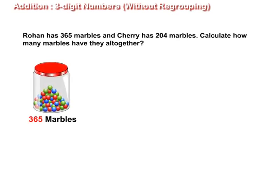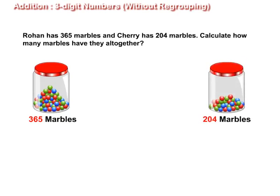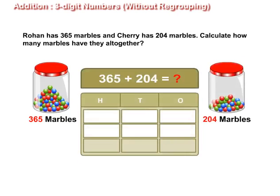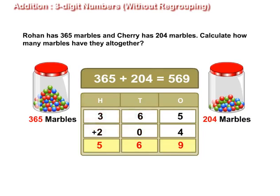Take one more example to understand addition of three-digit numbers by column method. Suppose Rohan has 365 marbles and Cherry has 204 marbles. Calculate how many marbles they have together. First, arrange both numbers vertically in columns. Now, first add the digits in the one's place, then add the digits in the tens place, and then add the digits in the hundreds place. Thus, Rohan and Cherry have 569 marbles altogether.